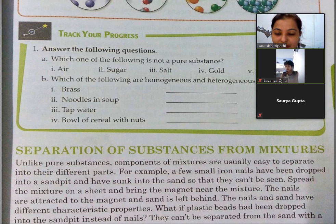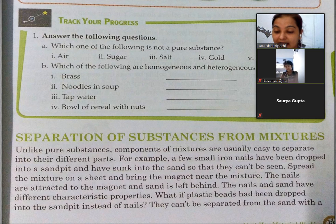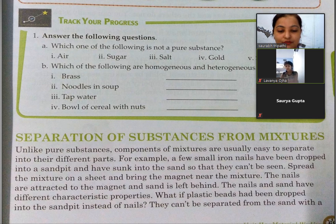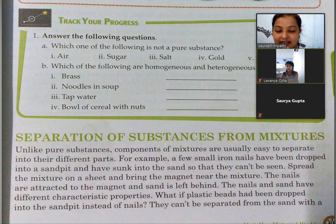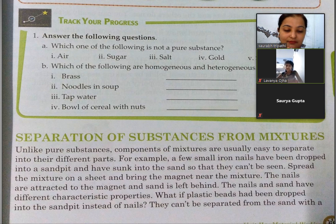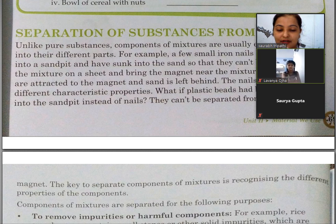Separation of Substances from Mixtures. Unlike pure substances, components of a mixture are usually easy to separate into their different parts. For example, a few small iron nails dropped in a sand pit can be separated by bringing a magnet near the mixture. The nails are attracted to the magnet and the sand is left behind. The nails and sand have different characteristic properties.